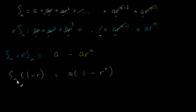And now we see that we can actually solve for Sn. Just divide both sides by 1 minus r. So Sn is equal to a times 1 minus r to the power of n over 1 minus r. And this is the formula for the sum of a GP.